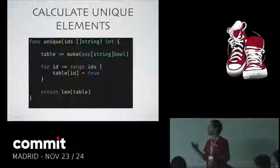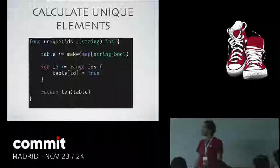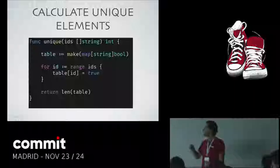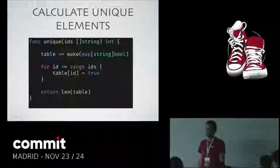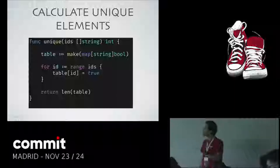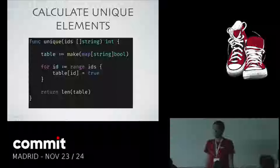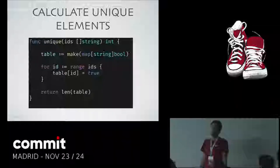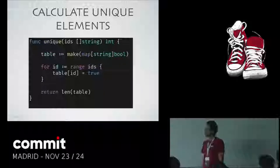I receive in my function a list of IDs — it could be IDs of users, purchases — something that I need to count how many unique ones I have. A very common approach is: I create a hash table in memory, I iterate through all those IDs, I put them into this table, and at the end I count how many I have in this table. It works and can be a perfect solution.